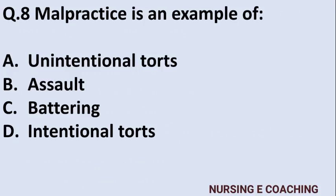Question 8: Malpractice is an example of — Option A: unintentional tort, Option B: assault, Option C: battery, Option D: intentional tort. Answer is A — unintentional tort.